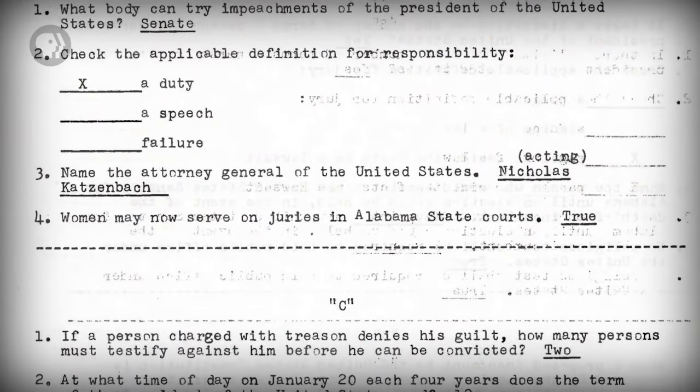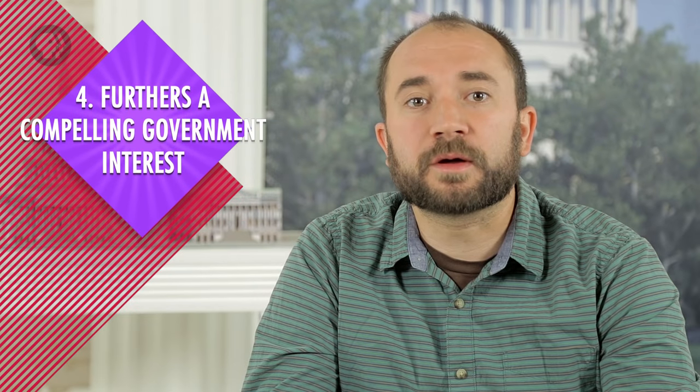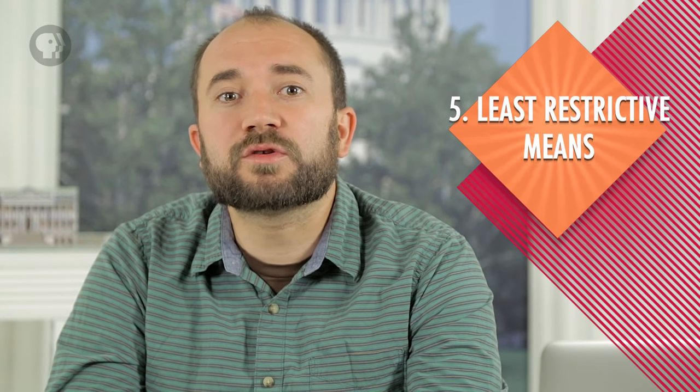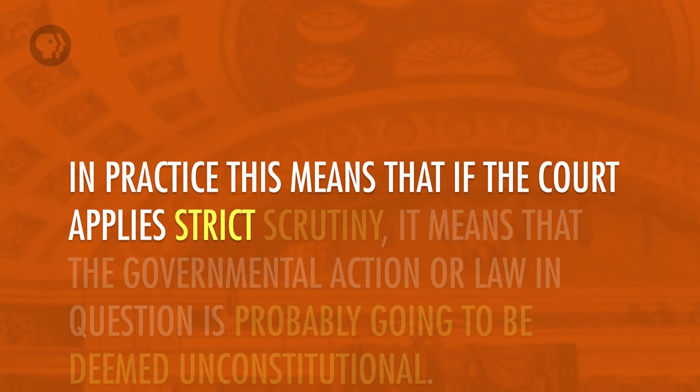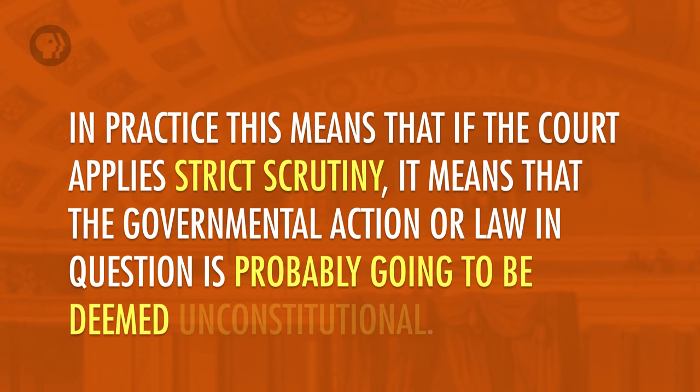Third, the courts look at whether the law or executive action places an undue burden on the person or group in question — for example, a state requiring literacy tests for voting. Fourth, assuming the first three qualifications are met, the courts look to see if the law furthers a compelling government interest; in the literacy test example, the interest might be creating an educated pool of voters, though that may not qualify as compelling. Fifth, if the court finds the law meets all other criteria, it looks to see if the government action follows the least restrictive means of achieving the government's interest — is there a less burdensome way to accomplish the same goal? If yes, the law is struck down. This five-part test is quite strict, and if the court applies strict scrutiny, the governmental action is probably going to be deemed unconstitutional.